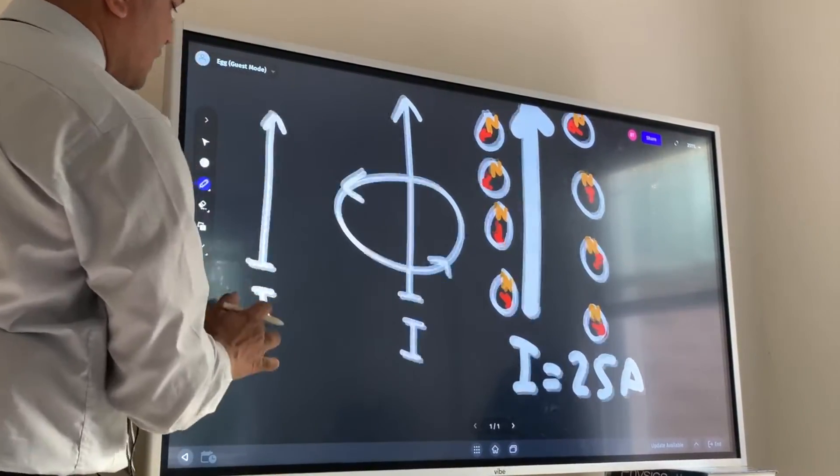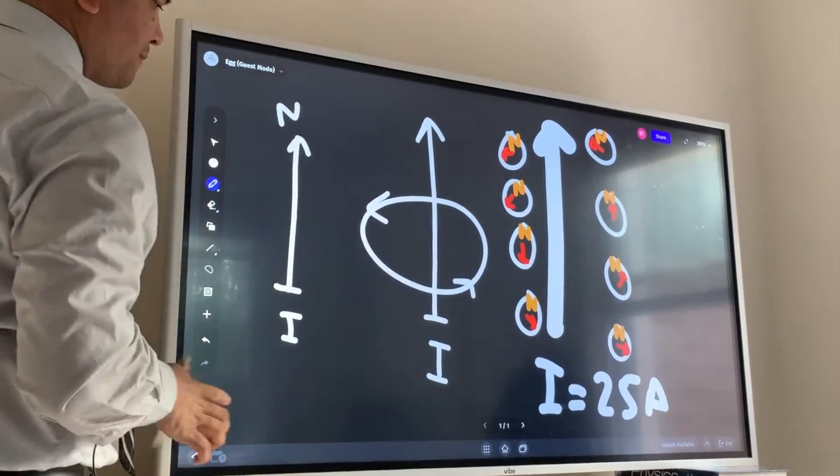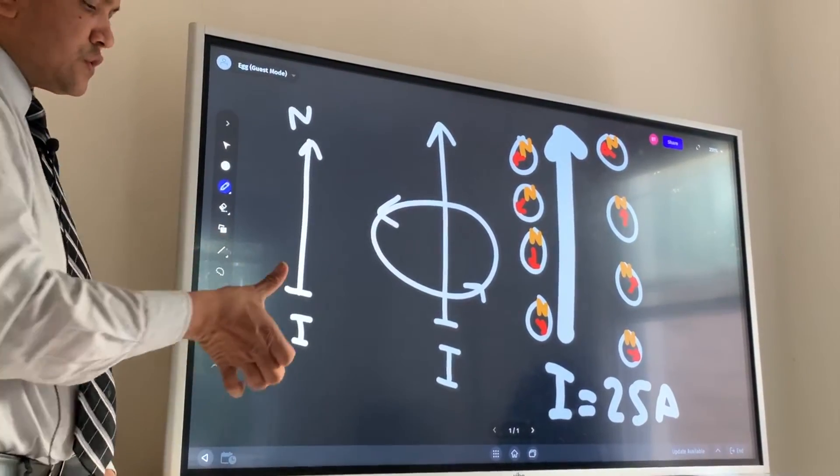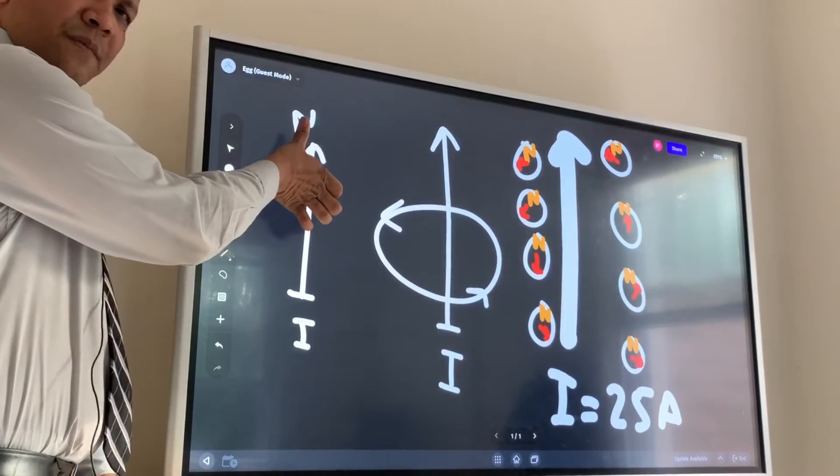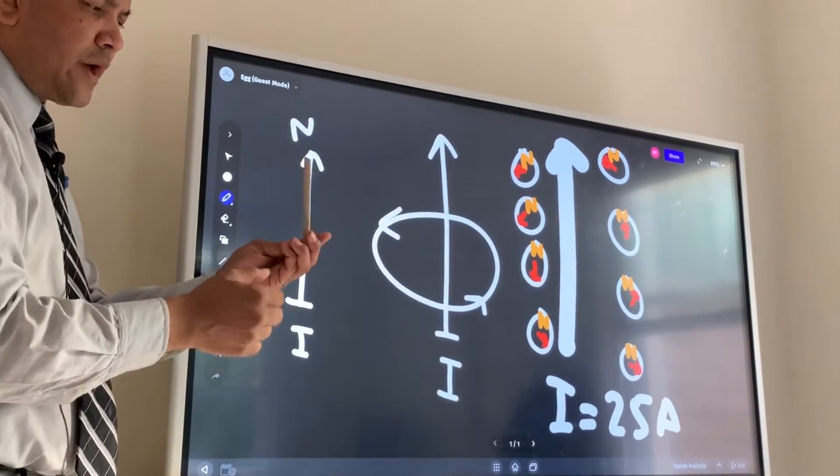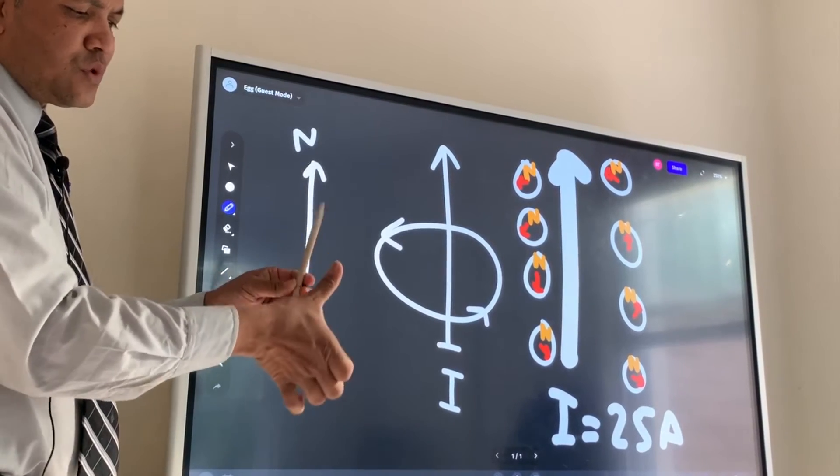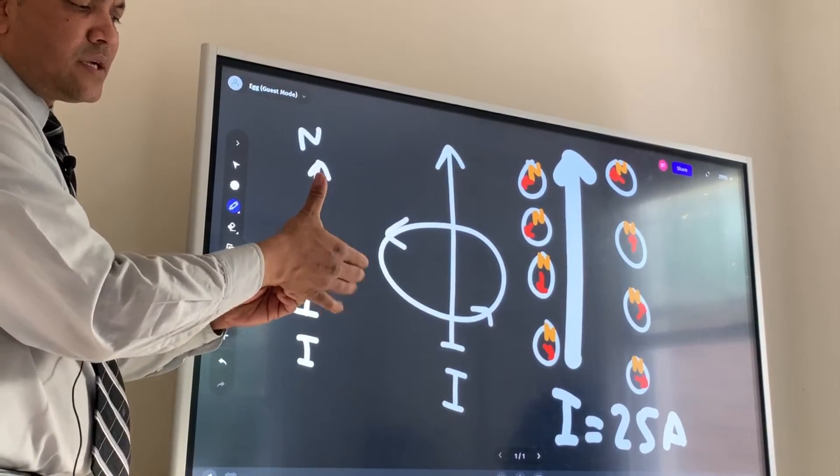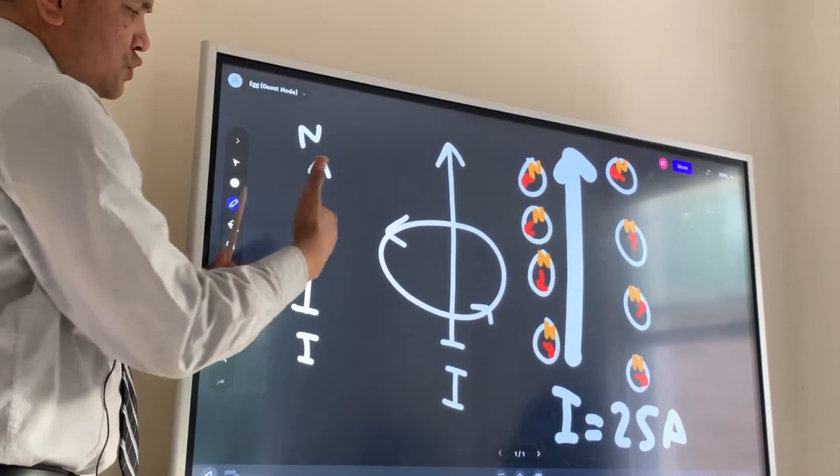This is current, and if current goes to the north, you're going to use the right hand. So the thumb is in the direction of the current and you curl your fingers around the wire. You put the thumb in the direction of the current and you grab the wire.